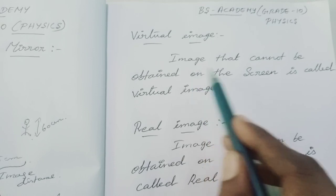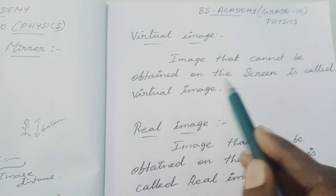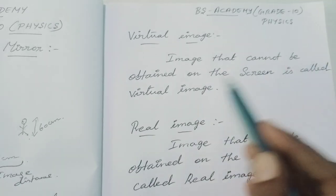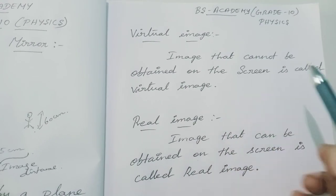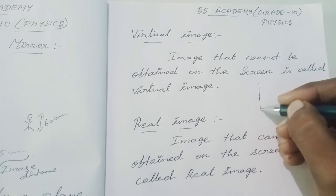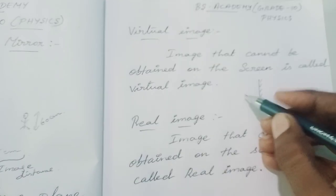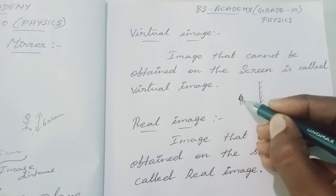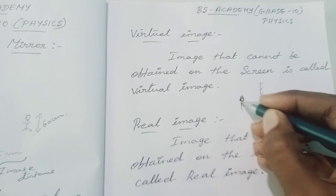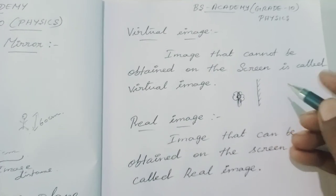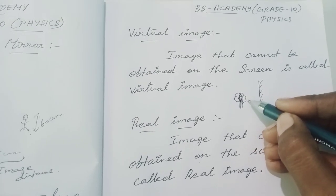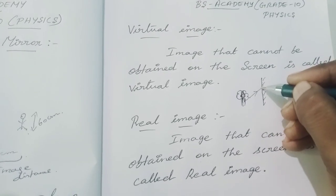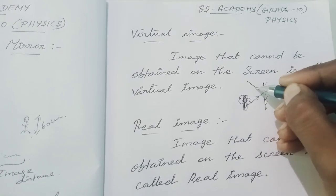The definition for virtual image is: an image that cannot be obtained on the screen is called a virtual image. For example, if you place a plane mirror and an object — consider a tree — the rays from the tree will fall on the plane mirror like this.